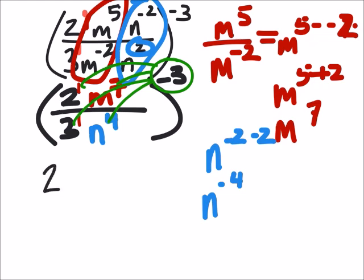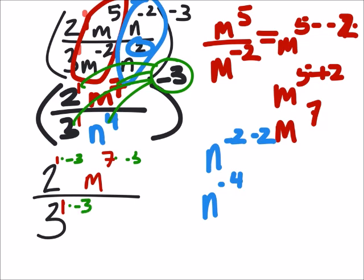So this means I've got 2, it was to the power of 1, but now it's going to be multiplied by the negative 3. Then I had m to the power of 7, but we're going to multiply that by negative 3. And this was all over 3, which was to the power of 1, times a negative 3. And then we had n to the power of 4, but now it is multiplied by negative 3.